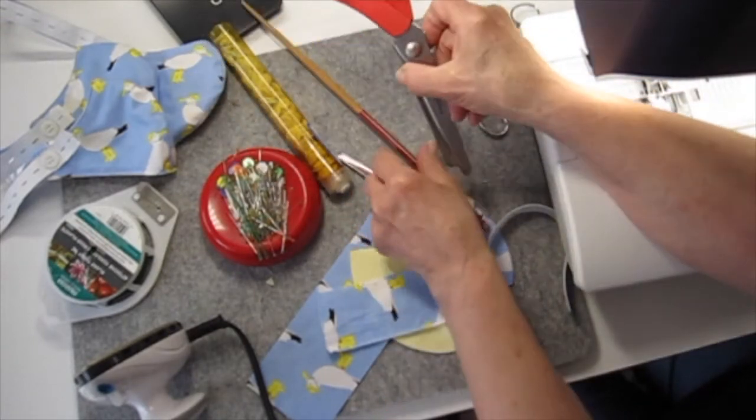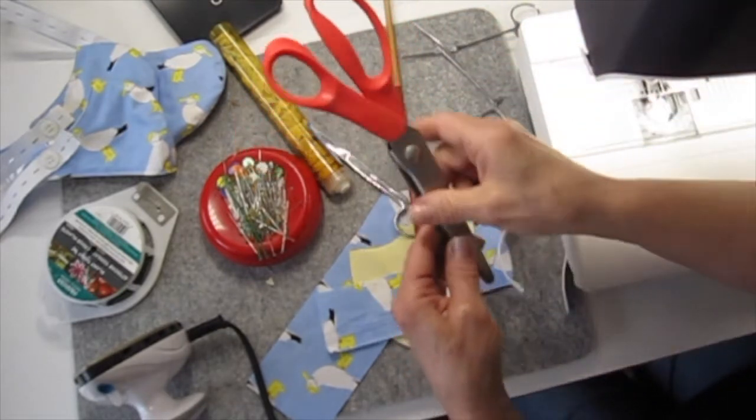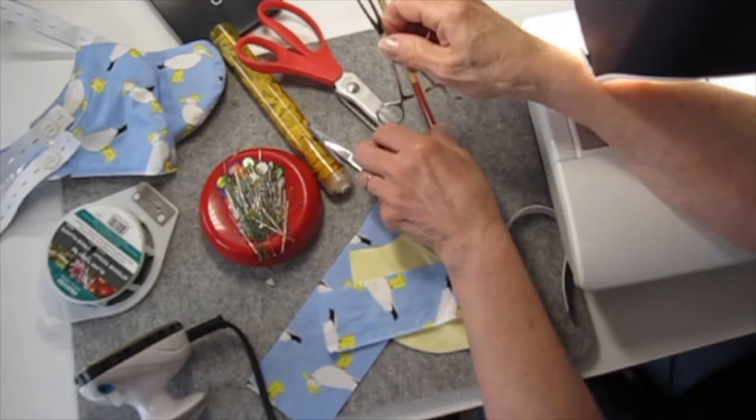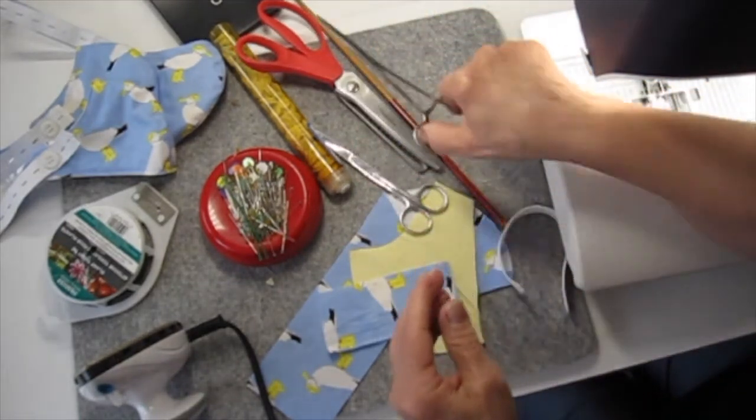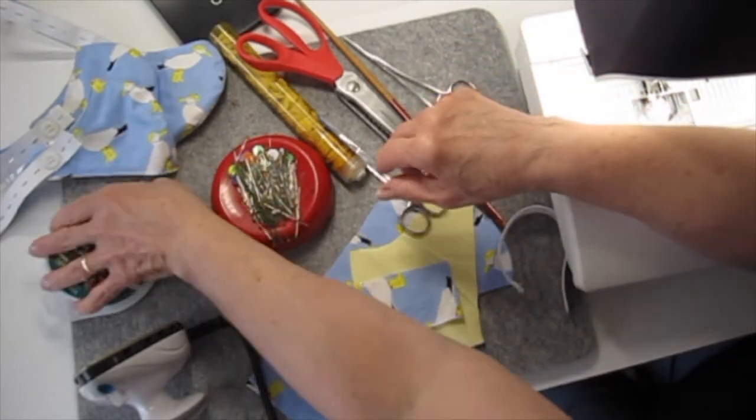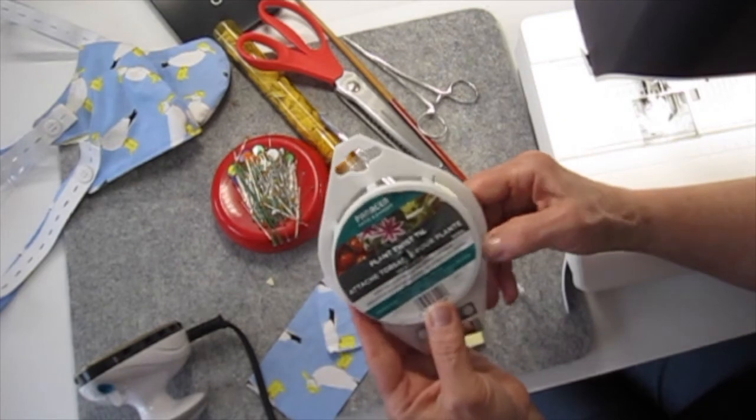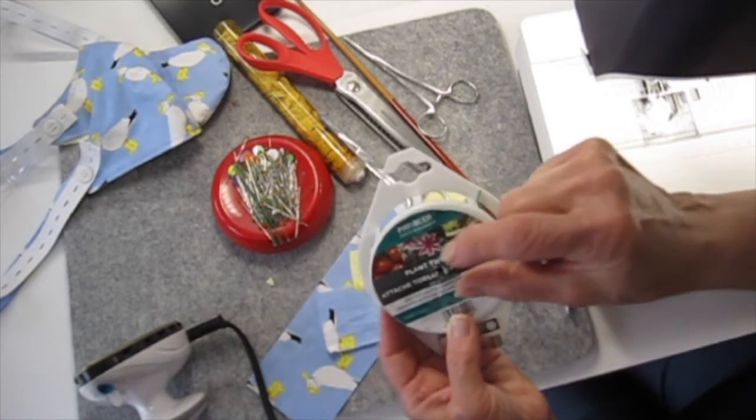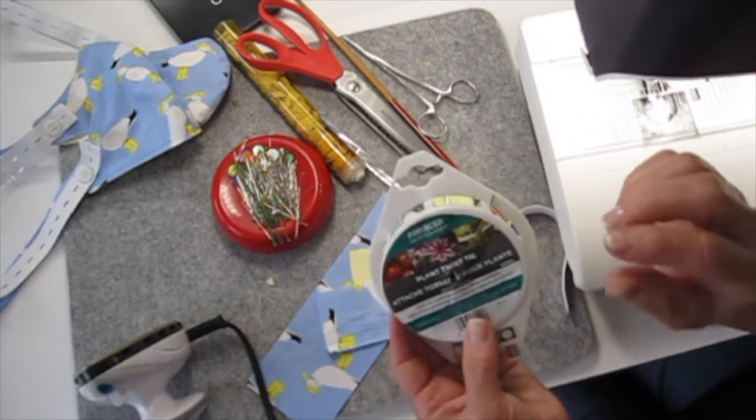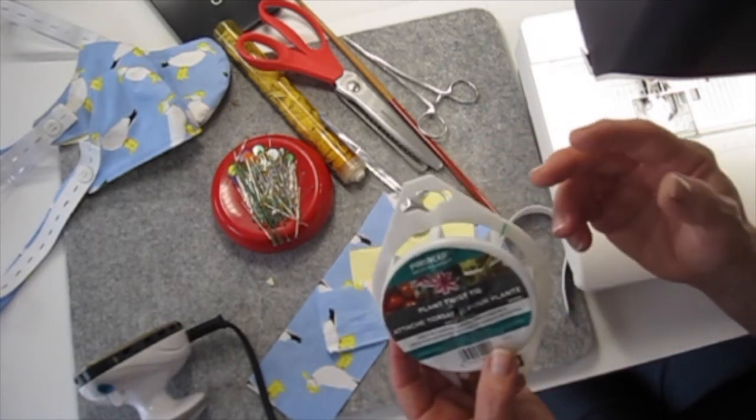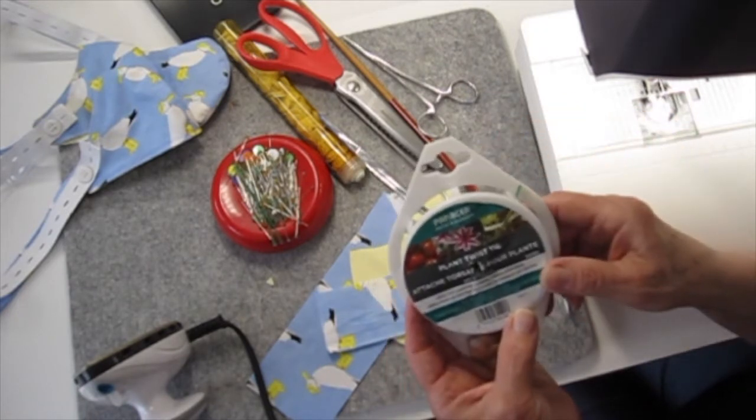I use pinking shears to pink that inner curve, otherwise just clip the curve. And I have a hemostat for turning the nose piece inside out. Also, this is what I use for the nose piece. On our kits, we had those plastic and metal pieces that are used to close coffee bags. They're called coffee bag closures. You can get them in a bag on Amazon. They're seven inches long. And you cut them in half for this.